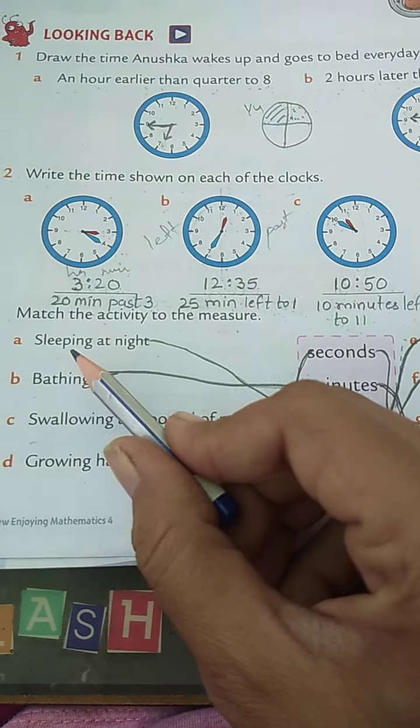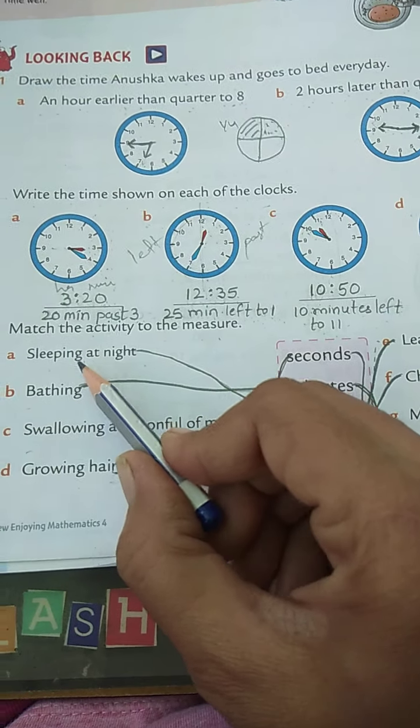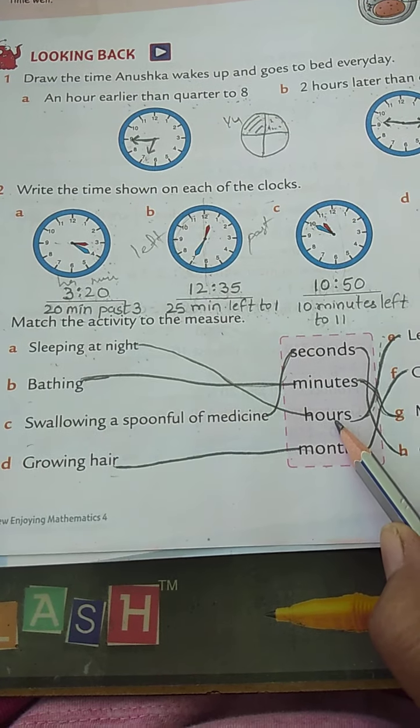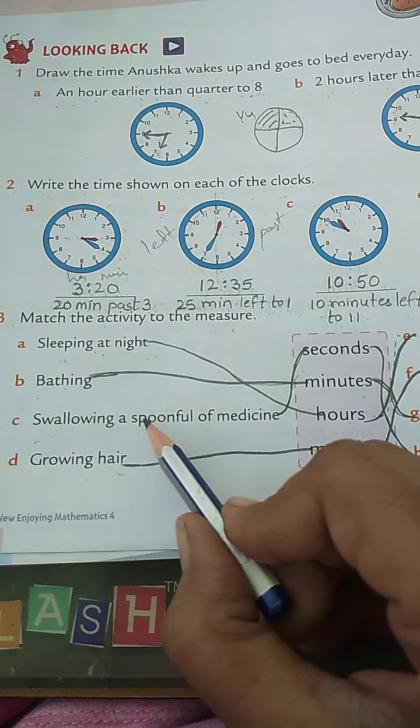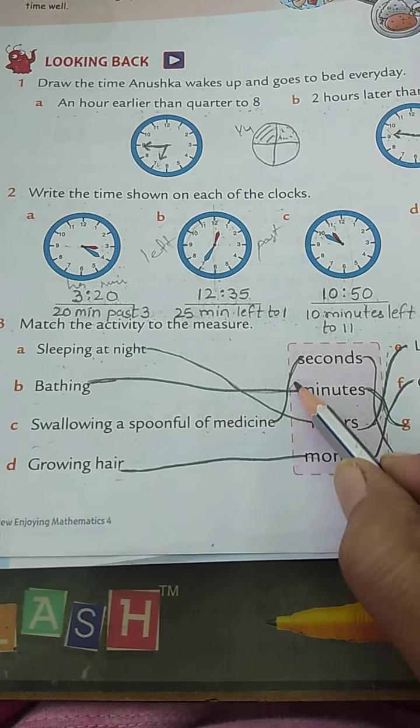Now how much time you take for doing this activity, children, you have to join the lines. Match it with the thing. Now sleeping at night, how much time you take? Hours. Bathing, you take minutes. Swallowing a spoonful of medicine, means medicine you are swallowing, then it is seconds.